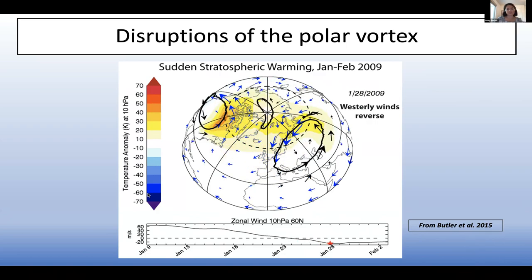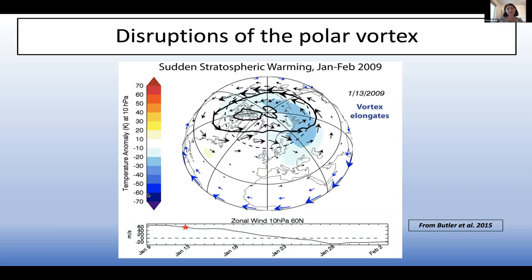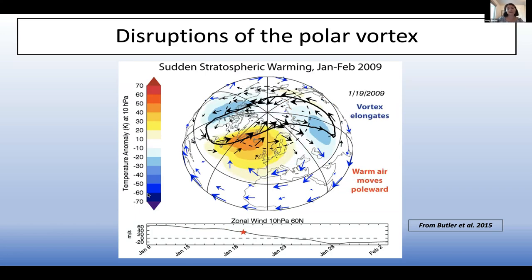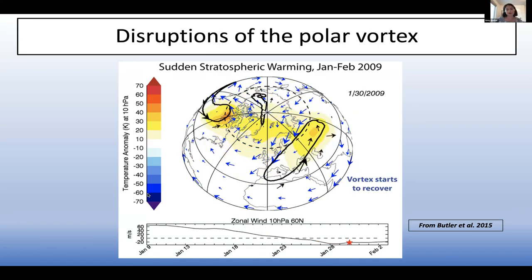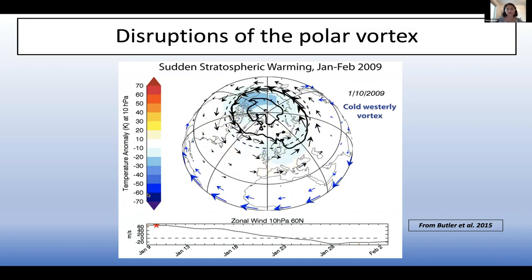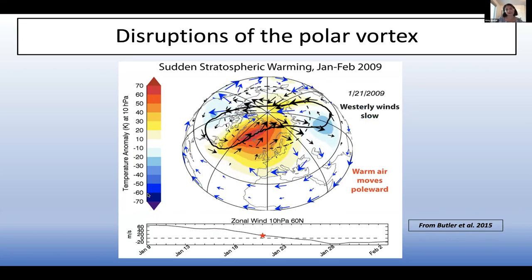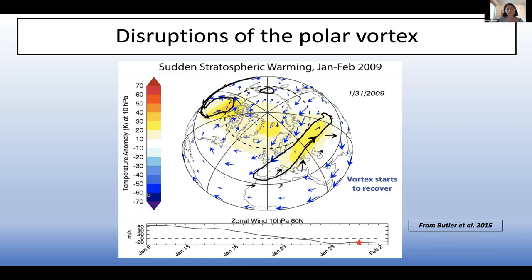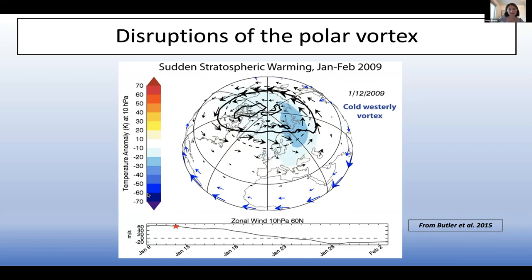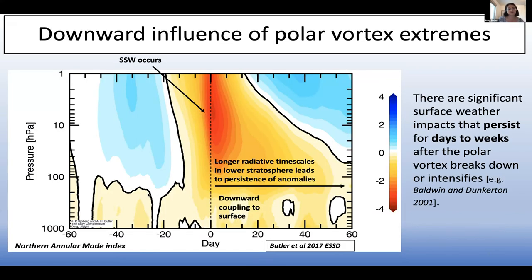By the end of the animation, the wind reverses direction entirely. The black contour shows the potential vorticity contour — in this case the vortex first elongates, then splits into two pieces. The temperatures shown in the shading reveal this rapid warming of the stratosphere.